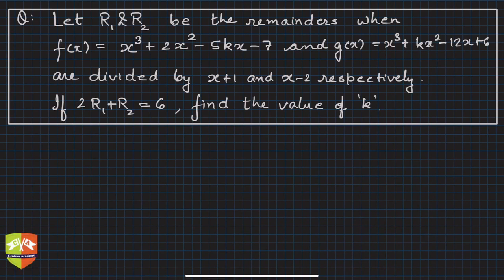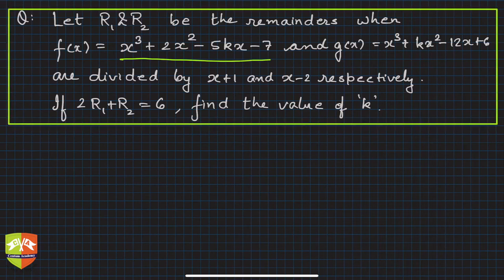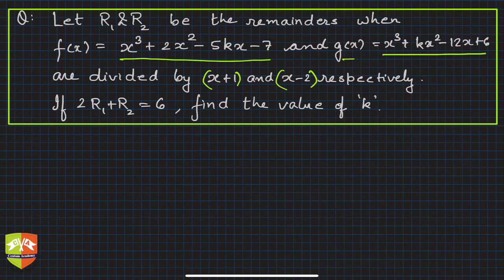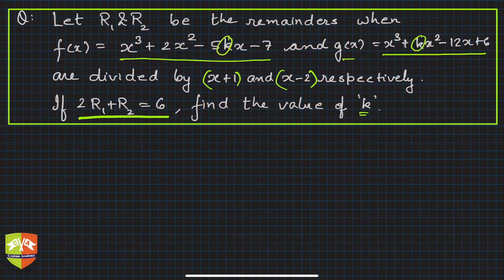Hello and welcome to another problem solving session on factor theorem and remainder theorem. In this question, we are going to use the remainder theorem. The question is: let r1 and r2 be the remainders when f(x) = x³ + 2x² − 5kx − 7 and g(x) = x³ + kx² − 12x + 6 are divided by x + 1 and x − 2 respectively. If 2r1 + r2 = 6, find the value of k — which appears in both polynomials.